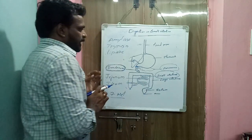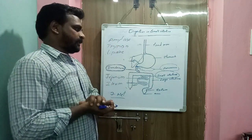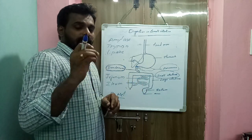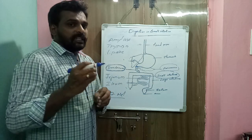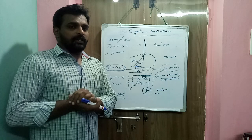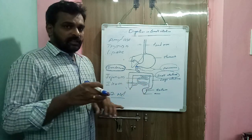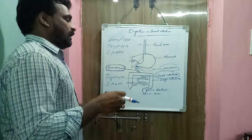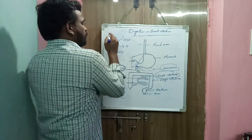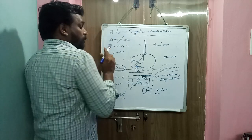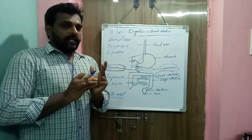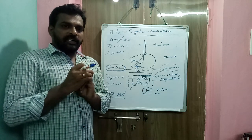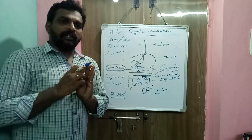The walls of the small intestine contain glands that secrete intestinal juice. The enzymes in pancreatic juice, intestinal juice, and bile together complete the digestion of complex carbohydrates, proteins, and fats — converting them into glucose, amino acids, fatty acids, and glycerol respectively.